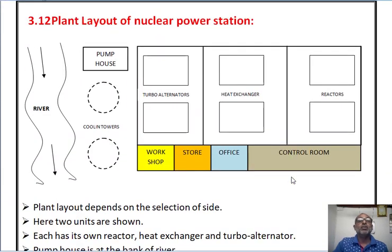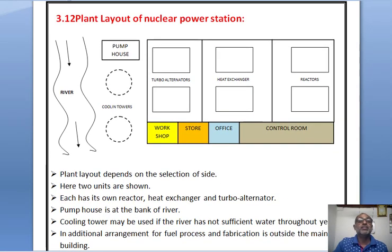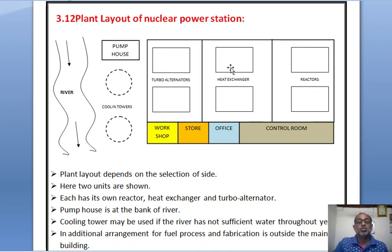The plant layout of the nuclear power station is dependent on the selection of soil. In this plant layout, two units are shown. Each unit has its own reactor, heat exchanger, and turbo alternator.